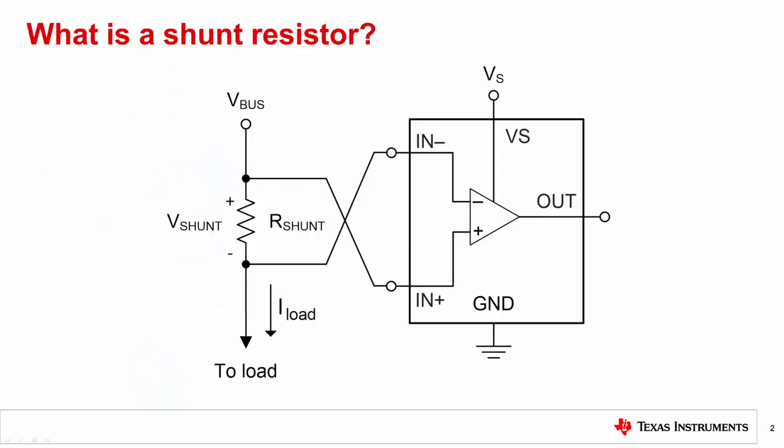First, let's define a shunt resistor or R_shunt. This is the resistor through which load current flows in a current sensing application. Due to Ohm's law, a differential voltage called V_shunt or V_sense is developed across R_shunt, which is then measured by a differential amplifier like a Current Sense amplifier.